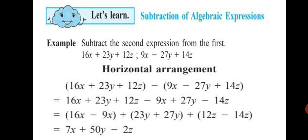The only difference for subtraction is the terms which are in the second bracket — you have to change the signs. If a negative term is there, you will make it positive; if a positive term is there, you will make it negative. Then the rest of the steps are the same as addition: group the like terms and then solve.